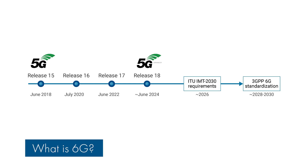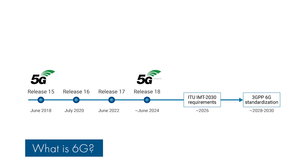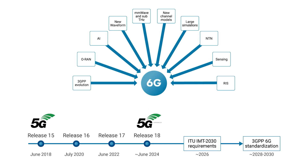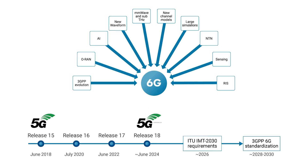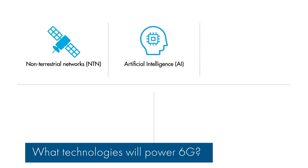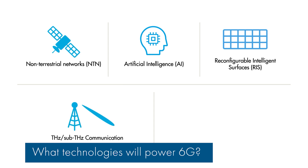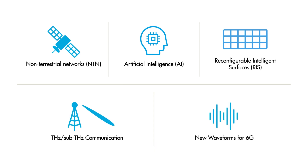The 6G standard will be specified in the coming years and is expected to be ready by 2030. 6G requirements will first be set by the International Telecommunication Union with their IMT 2030 vision projects. The Third Generation Partnership Project will then work on delivering specifications to meet those requirements. Since 6G networks can handle high data rates, new applications will be available to end users.